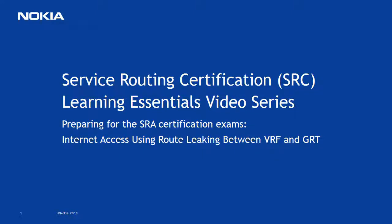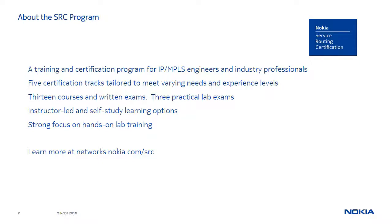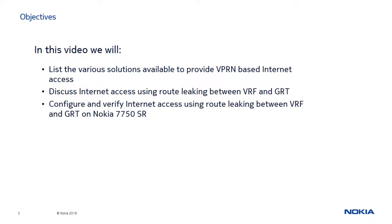Hello and welcome to this SRC Learning Essentials series video about Internet access using route leaking between VRF and GRT. In this video we will first list the various solutions available to provide VPRN-based Internet access. Next we will discuss Internet access using route leaking between the Virtual Route Forwarding or VRF table and Global Route Table or GRT. And finally we will move to our lab to configure and verify this solution on Nokia 7750 service routers.